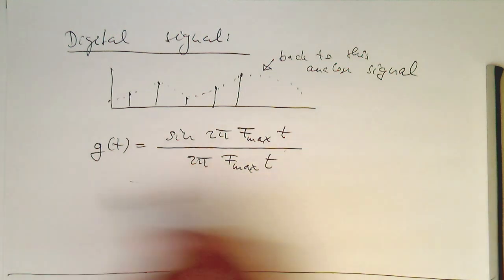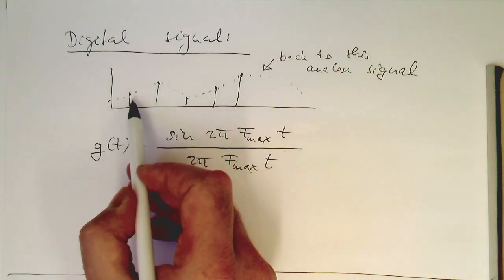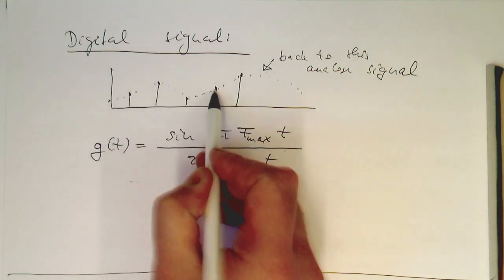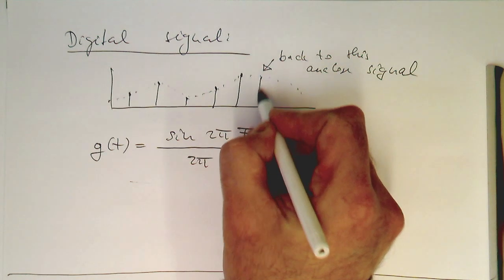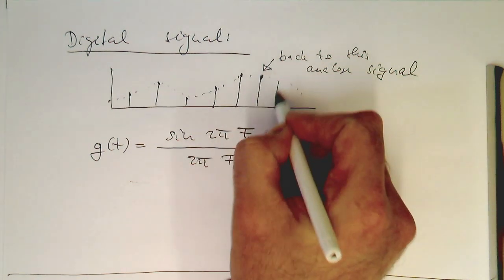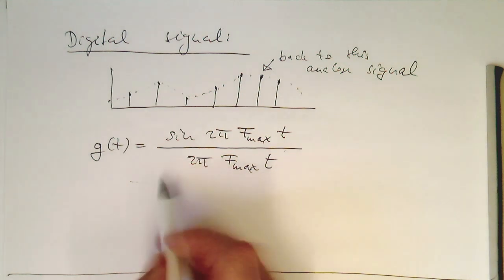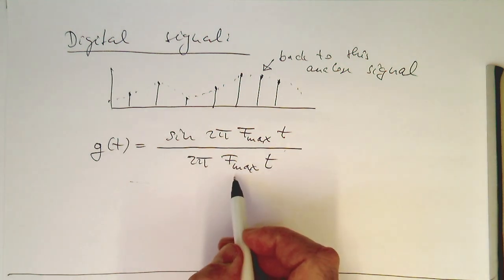And so we take this function here and put this function here on every of these samples here. So the question is, how does this function here look like?